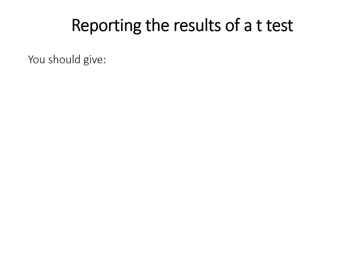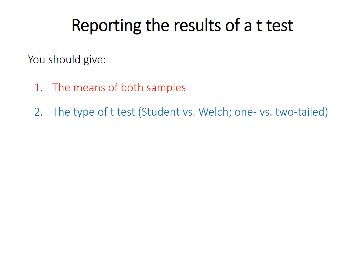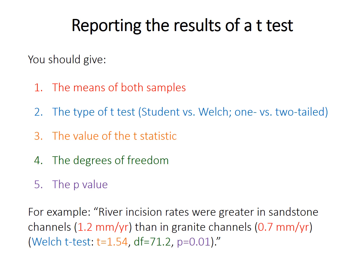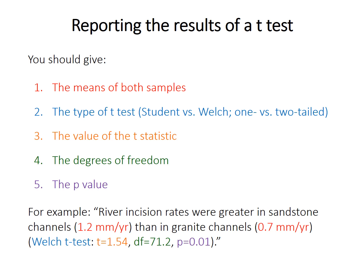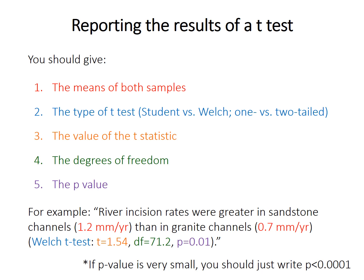Here's how you should report the results of a t-test in a results section. You should give the means of both samples, the type of t-test (Welch's t-test normally), whether it is one- or two-tailed, whether it is a paired t-test, the value of the t-statistic, the degrees of freedom, and the p-value. For example: river incision rates were greater in sandstone (give the mean) than in granite river channels (give the mean); Welch's t-test with the given t-statistic, degrees of freedom, and p-value. If the p-value is very small, you can write p < 0.0001 rather than the full scientific notation, since once it's that tiny it's simply highly significant.